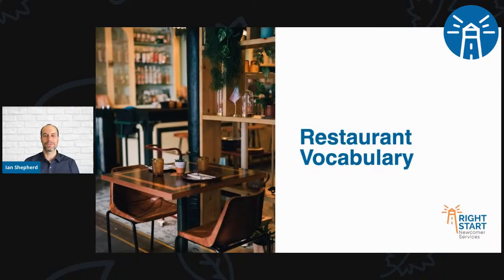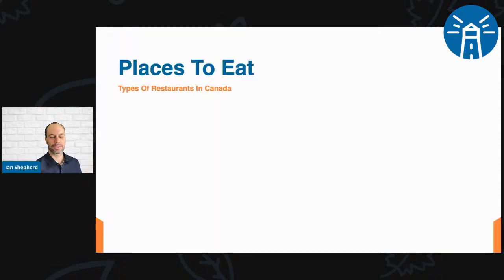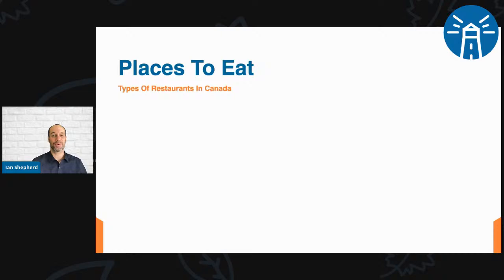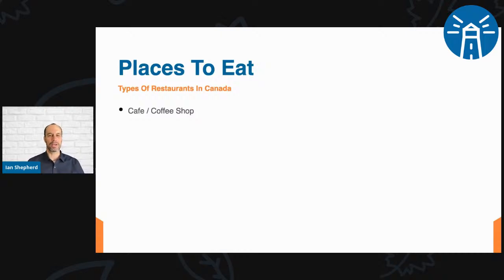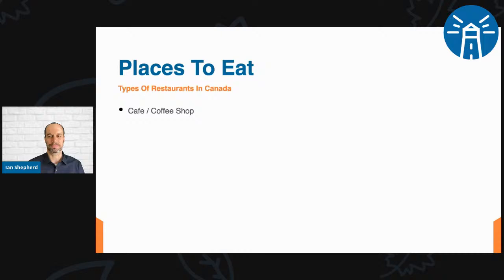Let's start with restaurant vocabulary. What are the different places we can eat in Canada? For example, we have coffee shops or cafes — basically the same thing. You go and order coffee, tea, drinks, but they also have small food items like sandwiches, muffins, and cookies. Can you think of any other places we can eat?